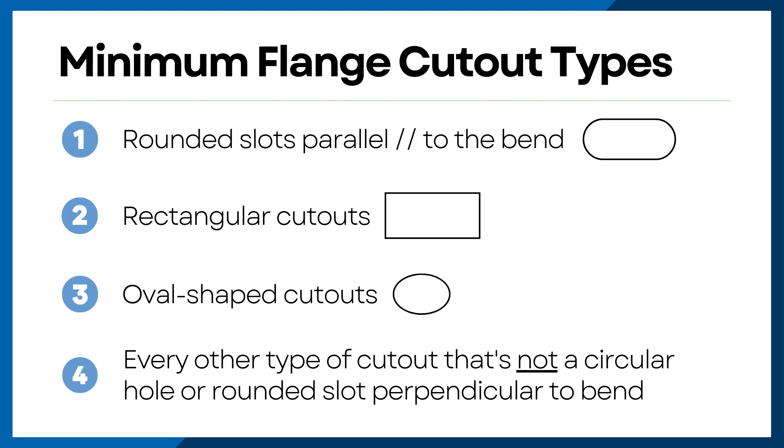For minimum flange, we are dealing with other styles of cutouts. These would be rounded slots parallel to the bend, rectangular or oval-shaped cutouts, and essentially every other type of cutout that's not a circular hole or rounded slot perpendicular to a bend.